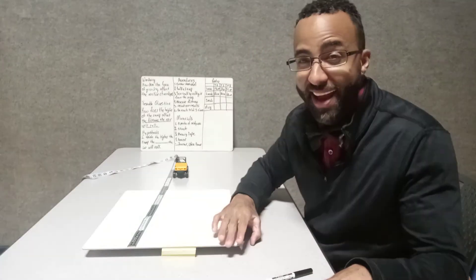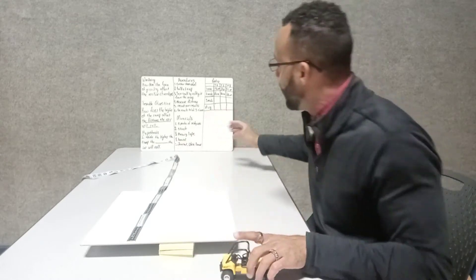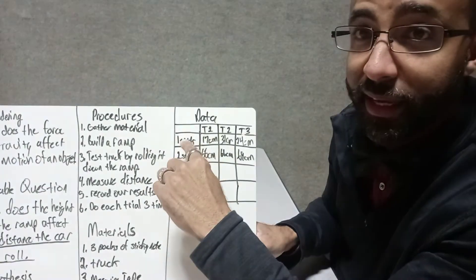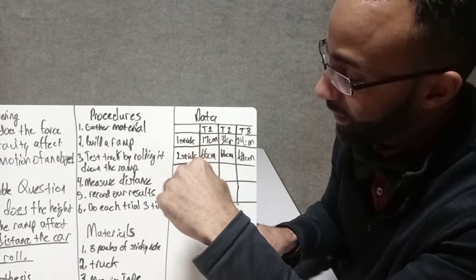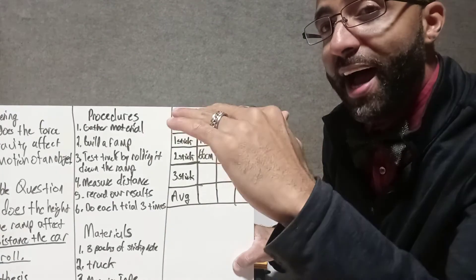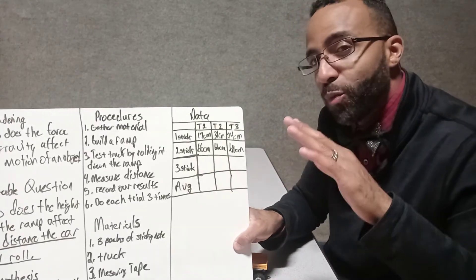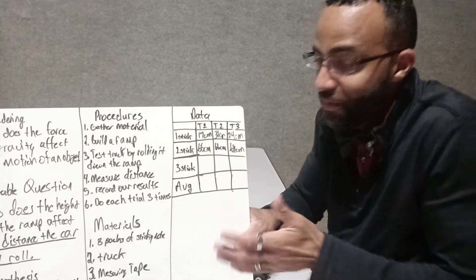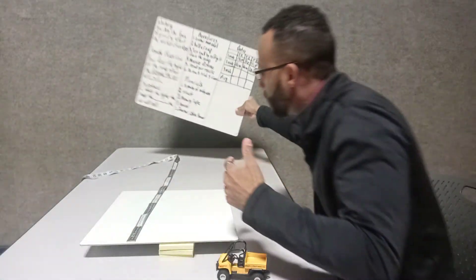Now we're going to add another sticky note. Last three trials — what do you think is going to happen? Do you see any pattern occurring in our results? Is it aligning with your hypothesis? At one sticky note we had 17, 31, and 24 centimeters. With two sticky notes — increased height — it went to 66, 66, and 69. What do you observe happening as we increase the height? This is going to be our conclusion, and we'll analyze our data to draw conclusions.